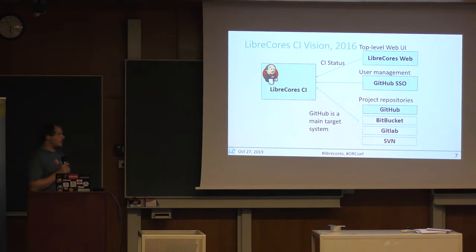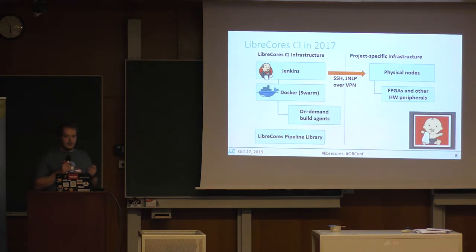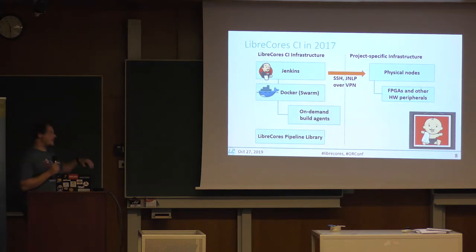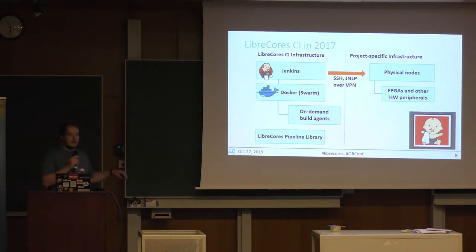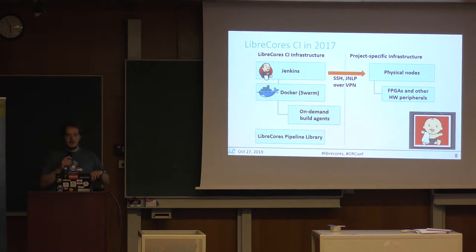We wanted to have integrations but keep most things in GitHub. In 2017, we had ORConf in Hebden Bridge in the UK, and I presented the state of LibreCourse CI, where we basically had this alpha setup of infrastructure. It was based on Jenkins, using Docker as a backend for virtualized simulation agents, able to connect physical nodes. We had some demos, and we also offered a pipeline library. If you're familiar with Jenkins, there is Jenkins pipeline technology which allows describing build flows in Groovy.